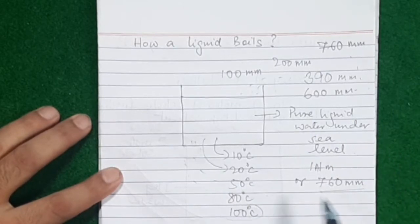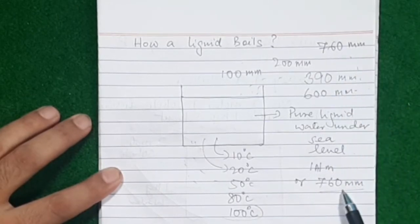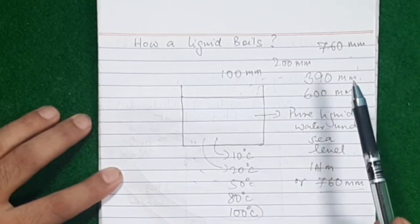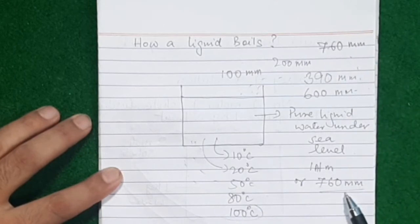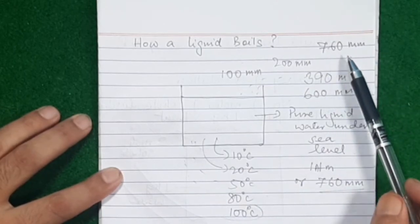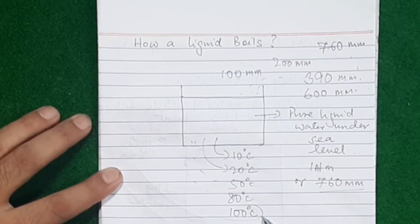Not just for water — for any liquid this concept is applicable. A liquid boils at that particular temperature where the vapor pressure of the liquid becomes exactly equal to the atmospheric pressure. Whenever vapor pressure equals atmospheric pressure, the liquid starts evaporating very fast, and that rapid evaporation is called boiling.